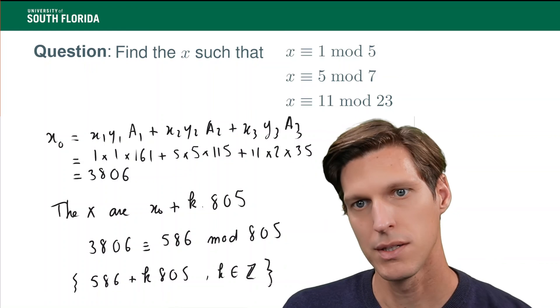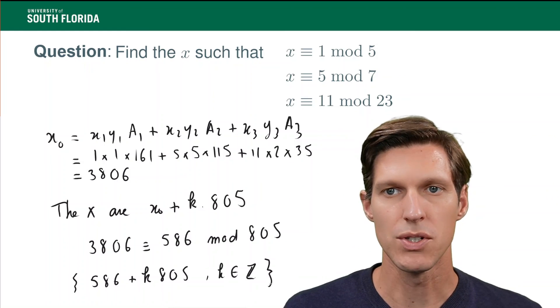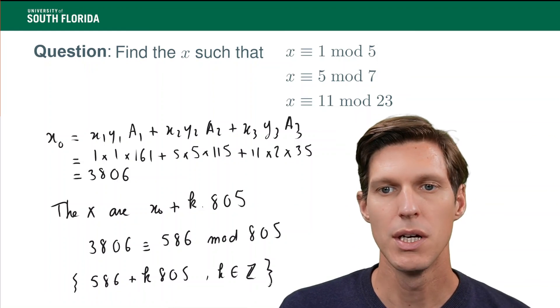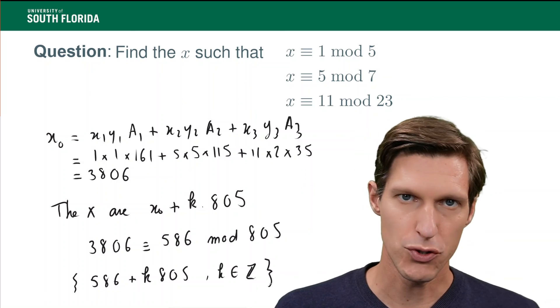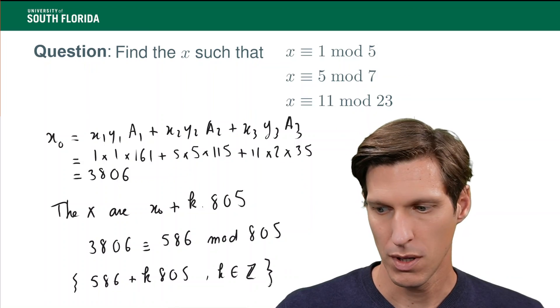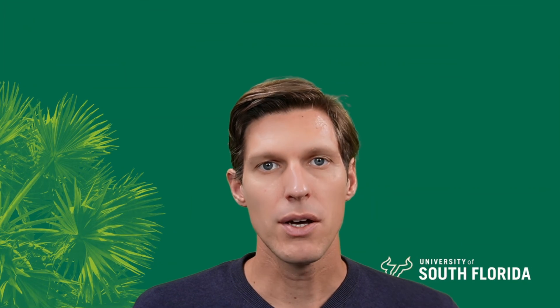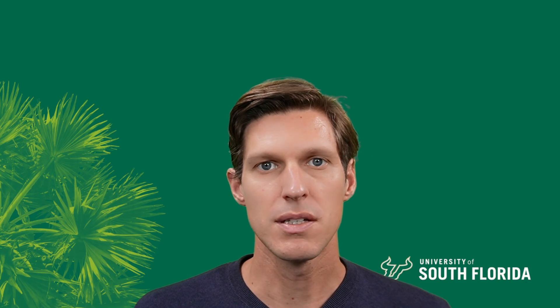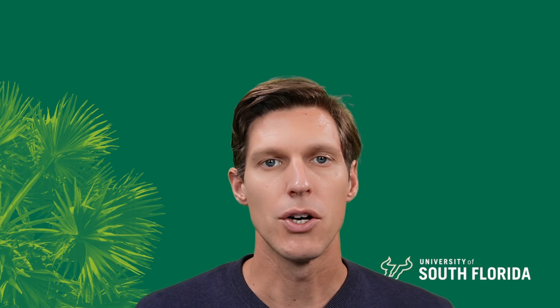Previously, it was still correct, but depending on the question, you might have to find a particular solution that is between maybe 0 and 804. So, now you know how to solve a system of linear congruence using the Chinese remainder method. Thank you.